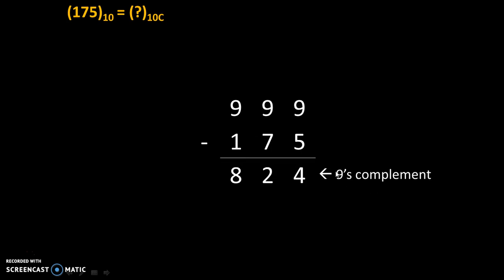From 9's complement, we can easily get 10's complement. To do that, we will add 1 to the 9's complement. So 9's complement is 824 plus 1, which will give us the 10's complement value.